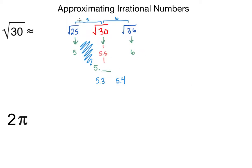The total distance from 25 to 36 is a gap of 11, and 30 is five elevenths of the way to the next perfect square. So it's not all the way there, it's not right in the middle, it's five elevenths of the way there.